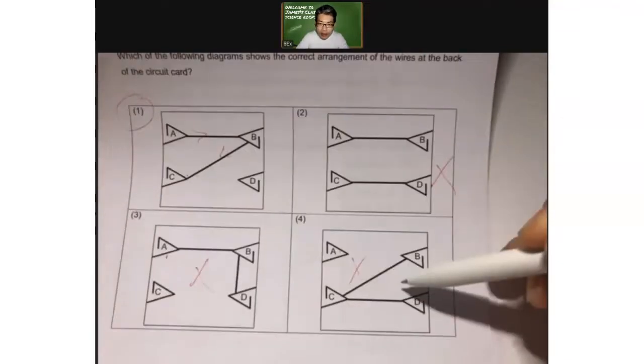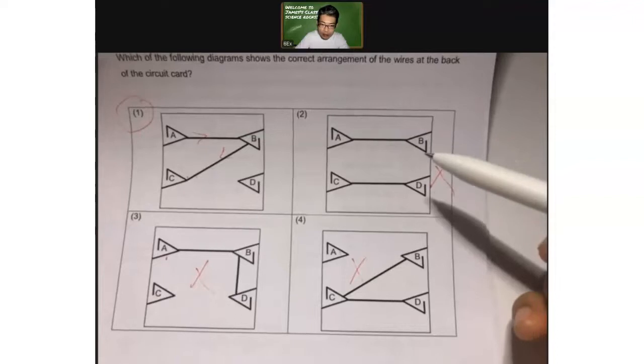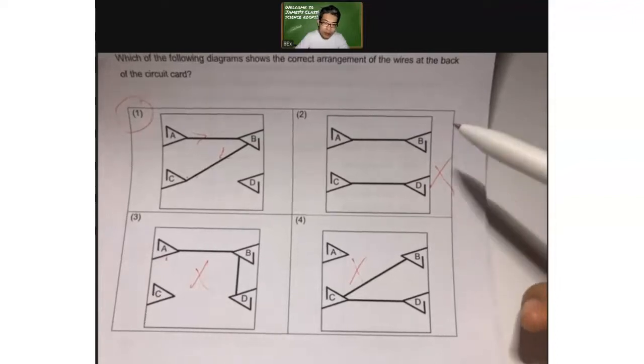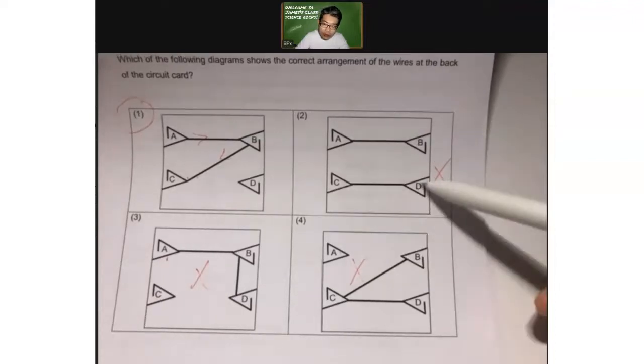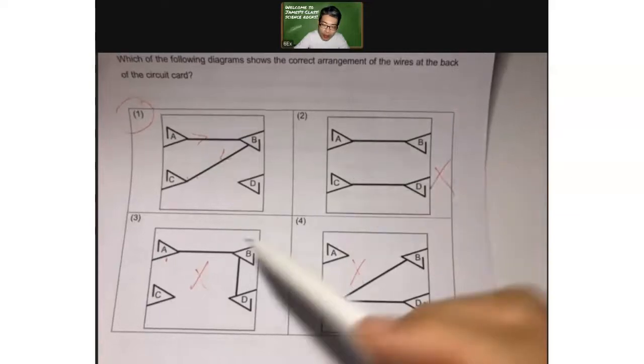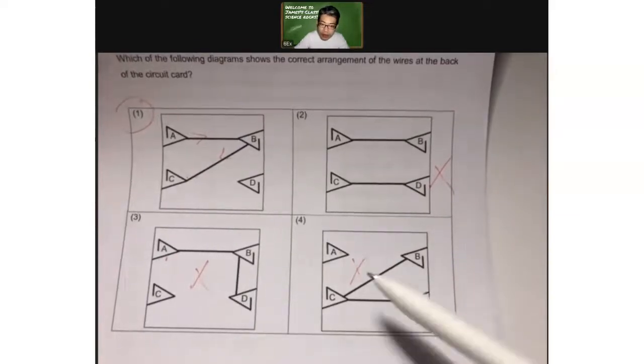For all the rest, you can see, right? A and C are not connected by any wires at all. See? Here? No connection. No connection to C. A is not connected to all this.